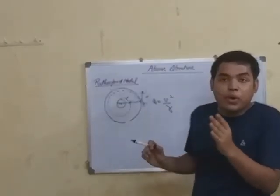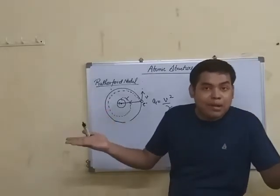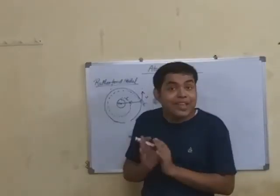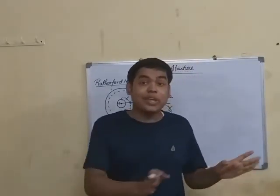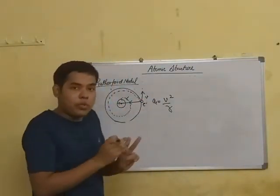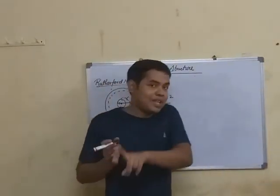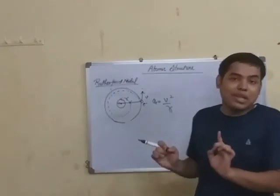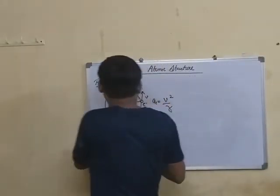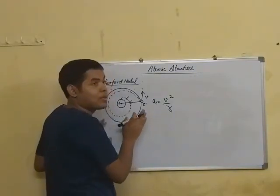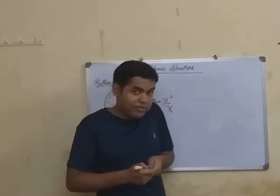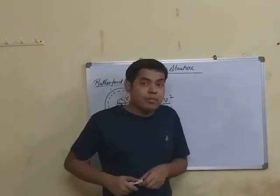If that happened, matter would not be stable — all matter would be unstable. But matter is stable, so the assumption that electrons move in circular orbits must be wrong. Rutherford's model has this critical flaw. Bohr corrected Rutherford, and in the next video, we will see Bohr's model.